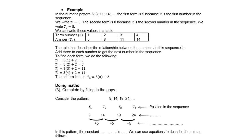Next example. In the numeric pattern 5, 8, 11, 14: the first term is 5, so t1 = 5; the second term is 8, so t2 = 8. In the table: term 1 is 5, term 2 is 8, term 3 is 11, term 4 is 14. The rule is: add 3 to each number to get the next, since 8 minus 5 is 3, 11 minus 8 is 3, 14 minus 11 is 3. So term 1 is 3×1 + 2, term 2 is 3×2 + 2, term 3 is 3×3 + 2, term 4 is 3×4 + 2. Therefore the formula is tn = 3n + 2.